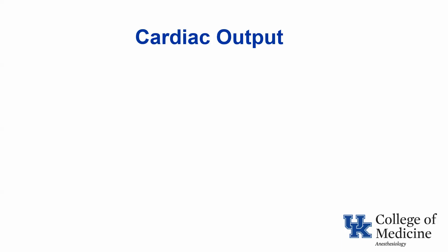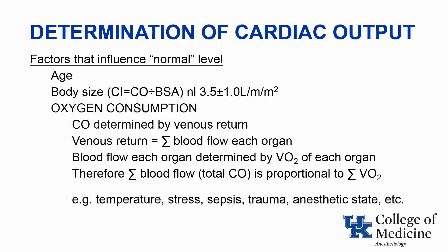Let us then turn to cardiac output. There are many factors that affect normal cardiac output. One is age, and as we age, cardiac output normally tends to fall. An important parameter is body size, but the underlying parameter is oxygen consumption. Normally, cardiac output is determined by venous return, and venous return is determined by the sum of blood flow to each organ, which is determined by the oxygen consumption of each organ. Therefore, the sum of blood flow is proportional to the sum of oxygen consumption. Oxygen consumption is influenced by temperature, stress, sepsis, trauma, anesthetic state, and so forth.